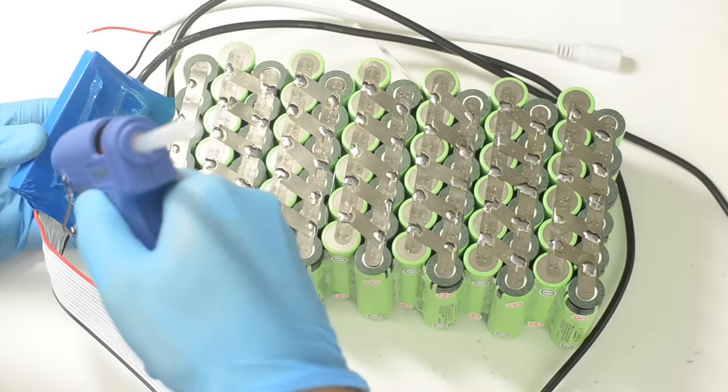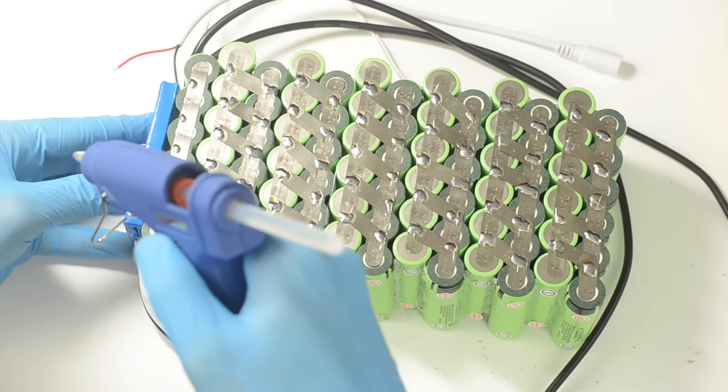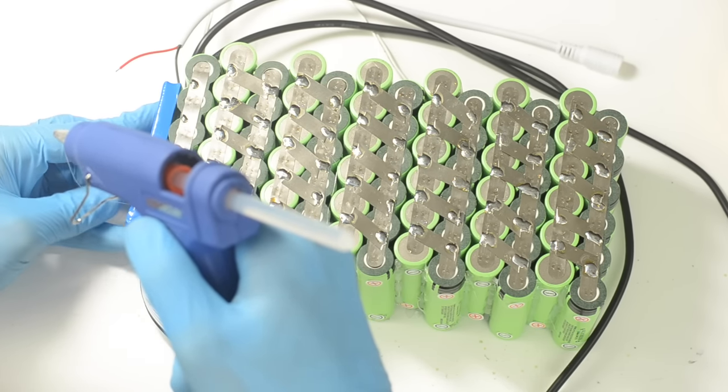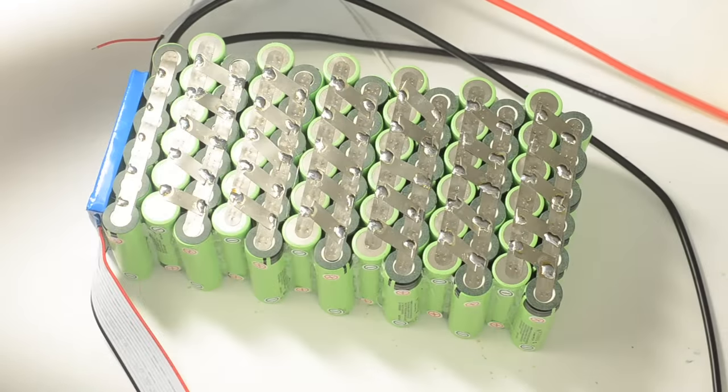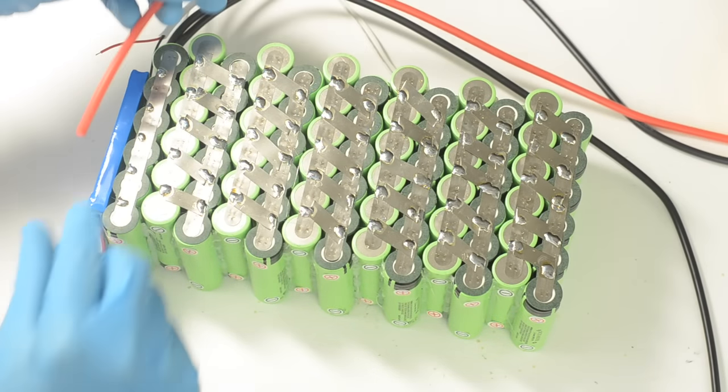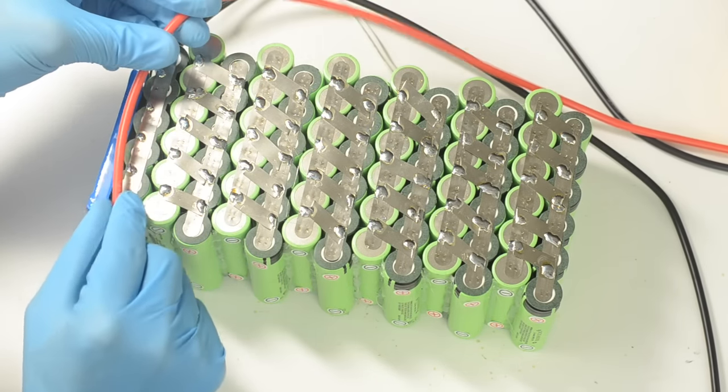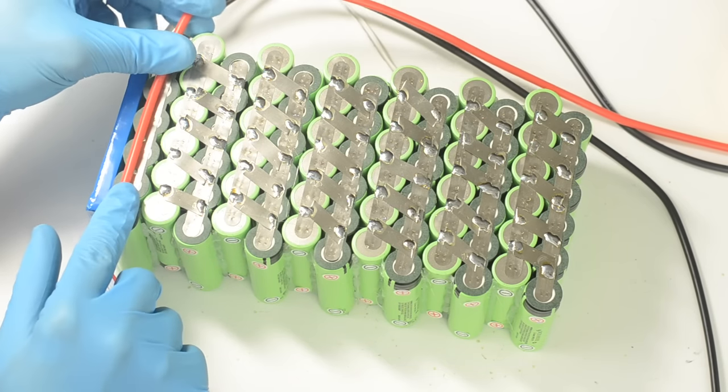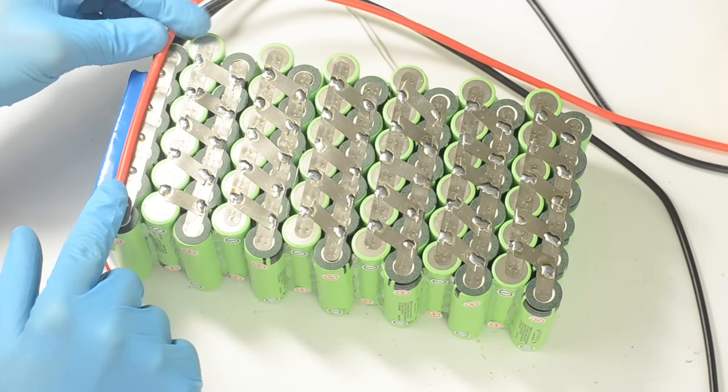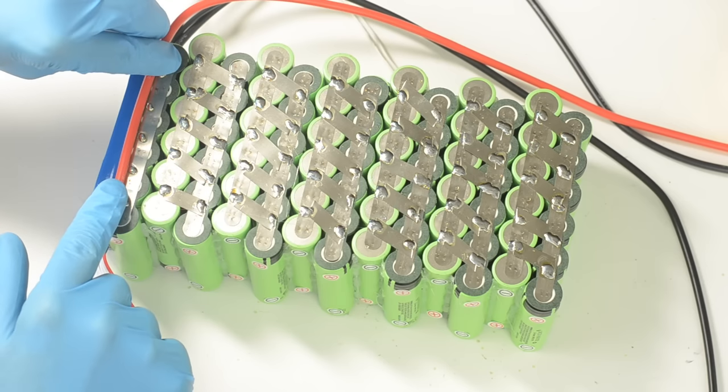Once I've made all of my series connections, I can glue my BMS onto the positive end of the pack by the 13th cell. And then I'll take the thick red wire that comes with the BMS, and I'll just measure out how far I need to cut back and strip that wire, so that I can solder that wire onto the 13th cell group.